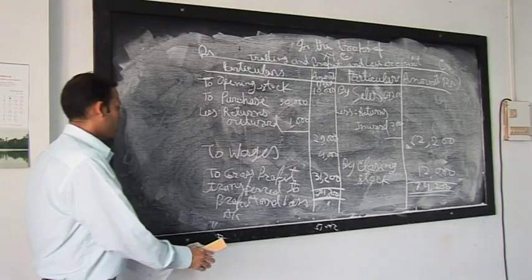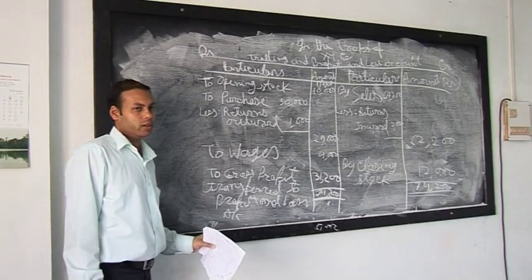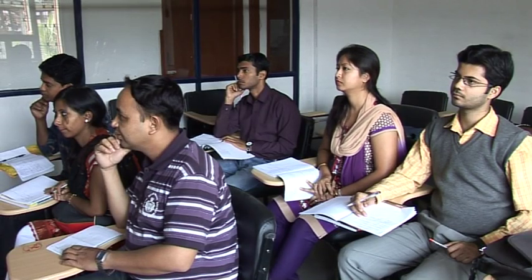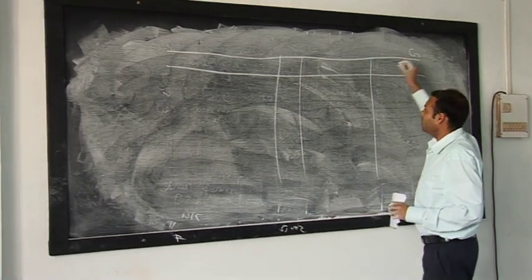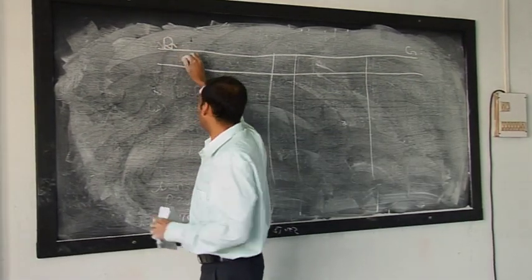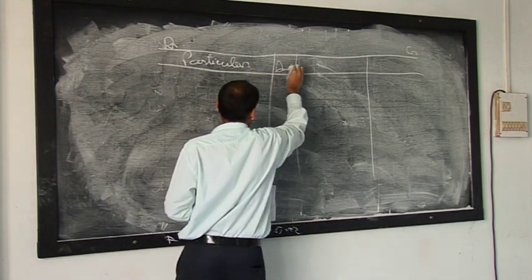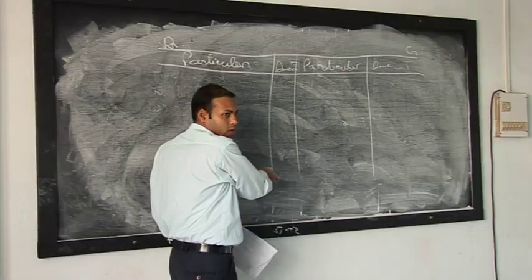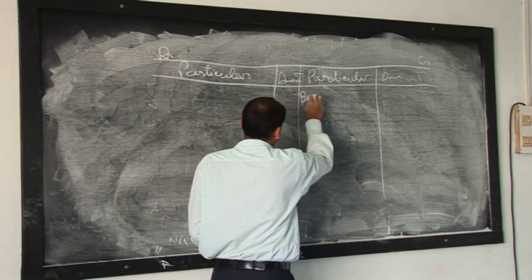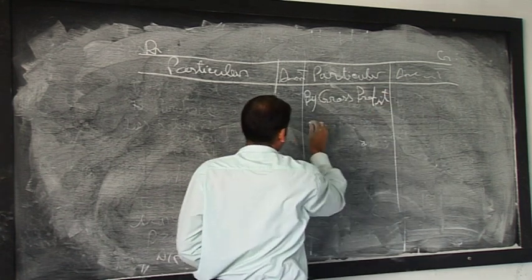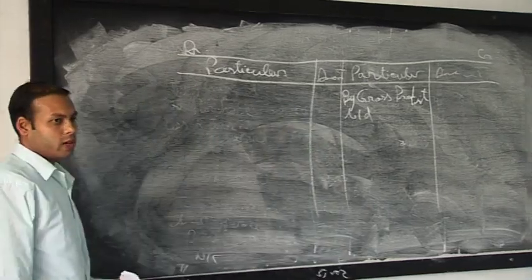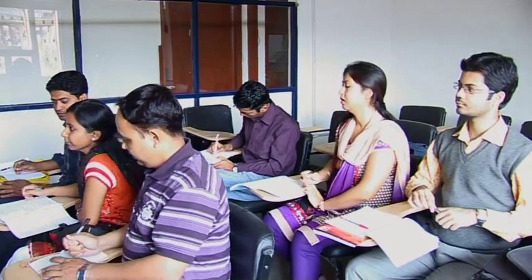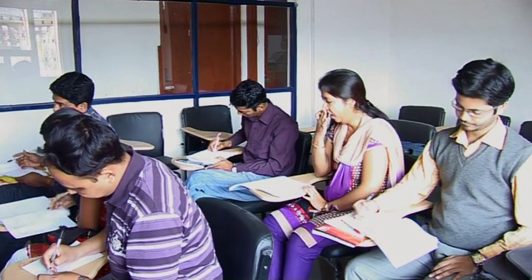Gross profit of 31,200 is transferred to the profit and loss account — written as 'To Gross Profit c/d.' Our business is earning a gross profit of 31,200. Having finished the trading account, our next step is preparation of the profit and loss account. This has the same format: credit side and debit side.